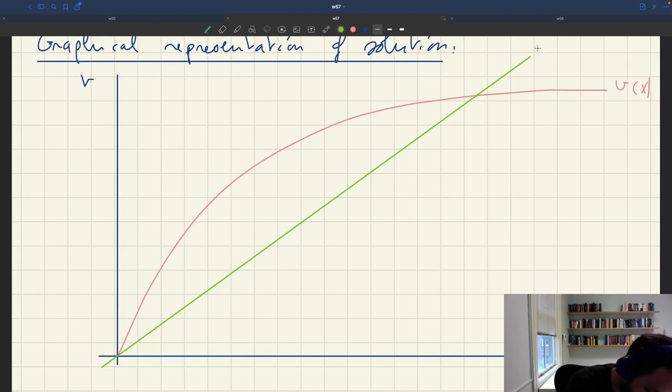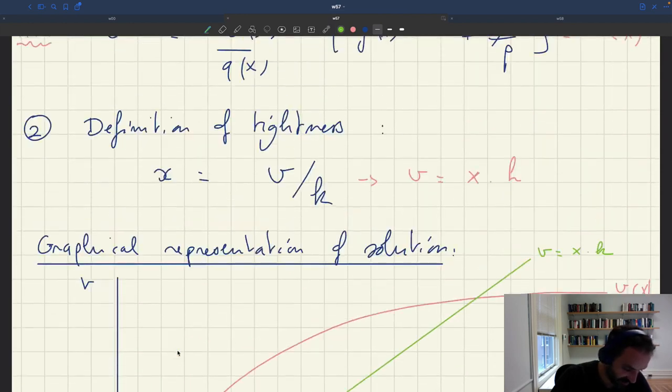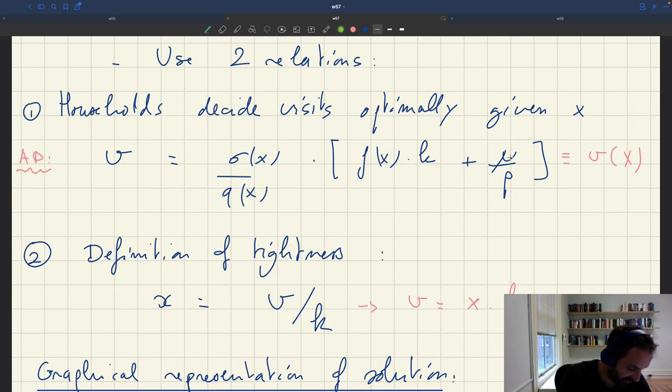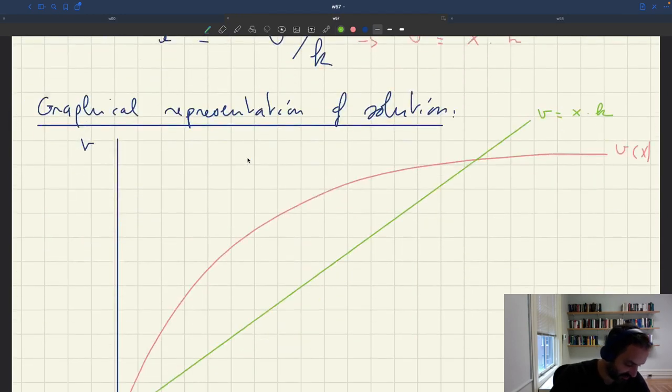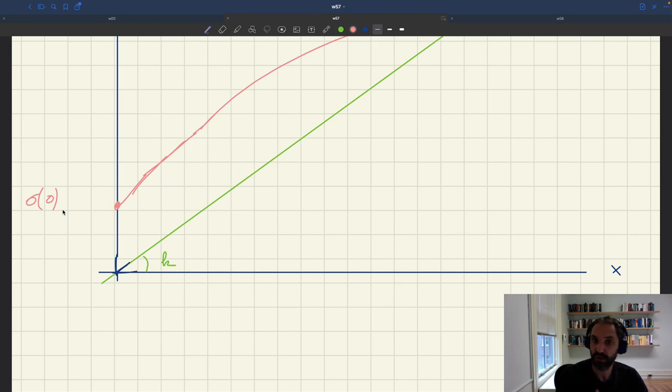This is X times K, and so here you would have K. Actually I made this one start at zero, but this one won't start at zero because we know that when tightness is zero, this is zero, this is positive. Sigma zero is strictly positive and Q is equal to one. So actually here I made a mistake. The V axis should have plotted something like this. And so this is sigma zero, which is strictly positive, divided by Q of zero, the buying probability at zero which is one, and then mu over P. This is sigma zero mu over P, which is strictly positive.